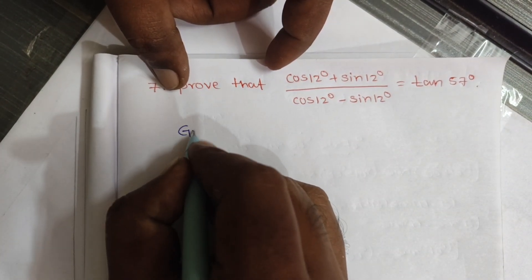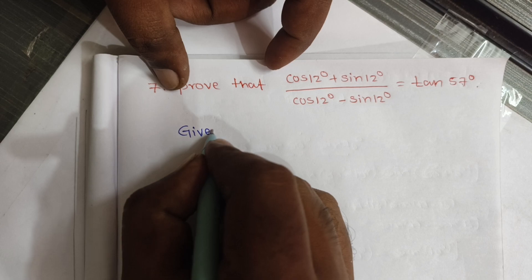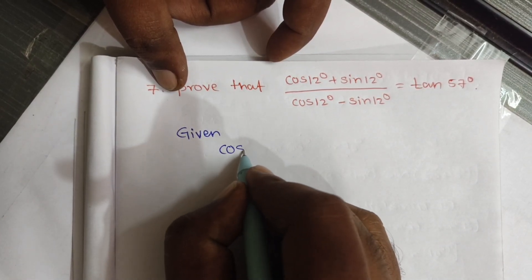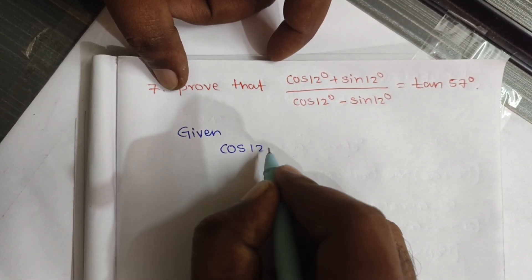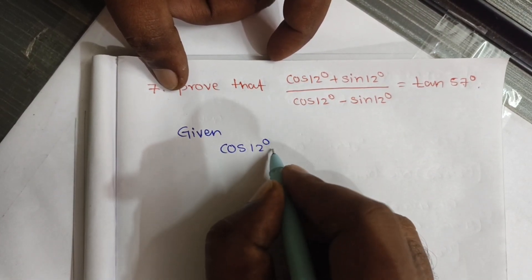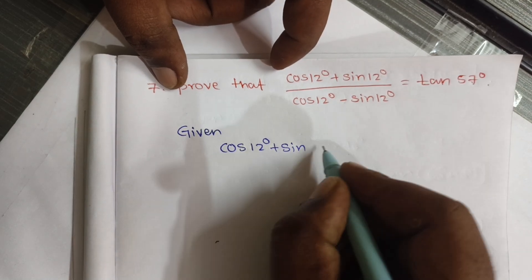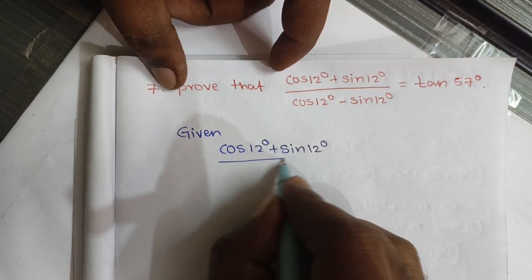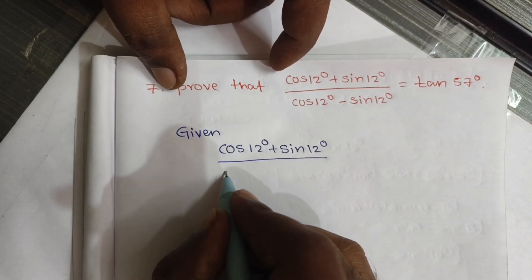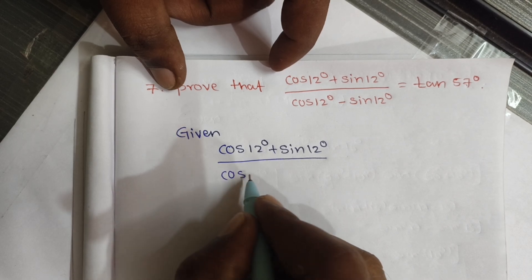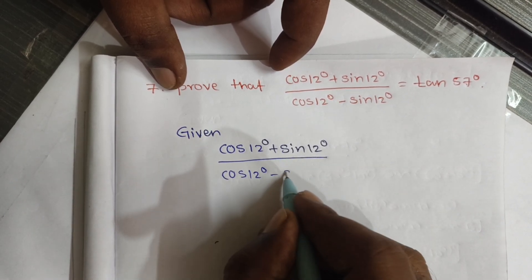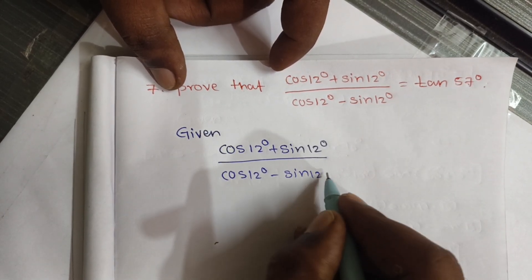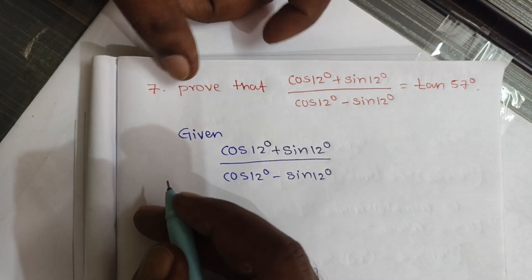Given: Cos 12 degree plus Sin 12 degree, divided by Cos 12 degree minus Sin 12 degree.